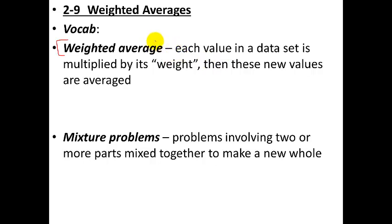Then these new values are averaged. So a normal average is you just take a whole bunch of numbers, you add them up, and you divide by how many numbers you had. In a weighted average, each number in the data set gets a certain weight that it's multiplied by. So some things carry a higher weight than others.